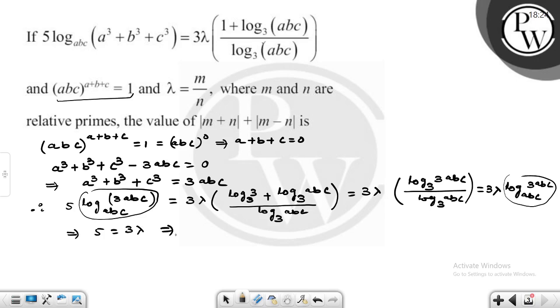This implies that λ equals 5/3. And this λ is m/n, which means m = 5 and n = 3.